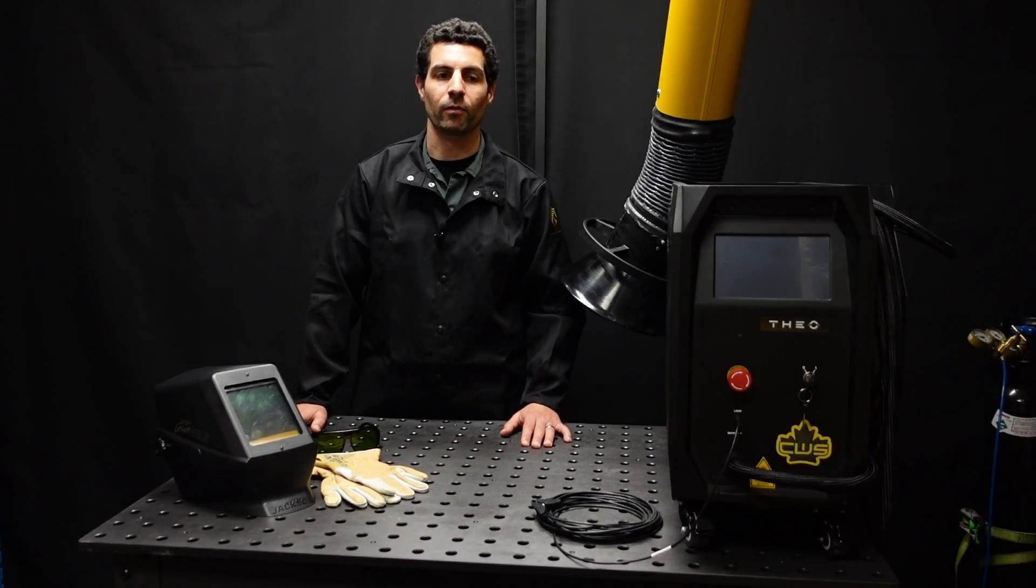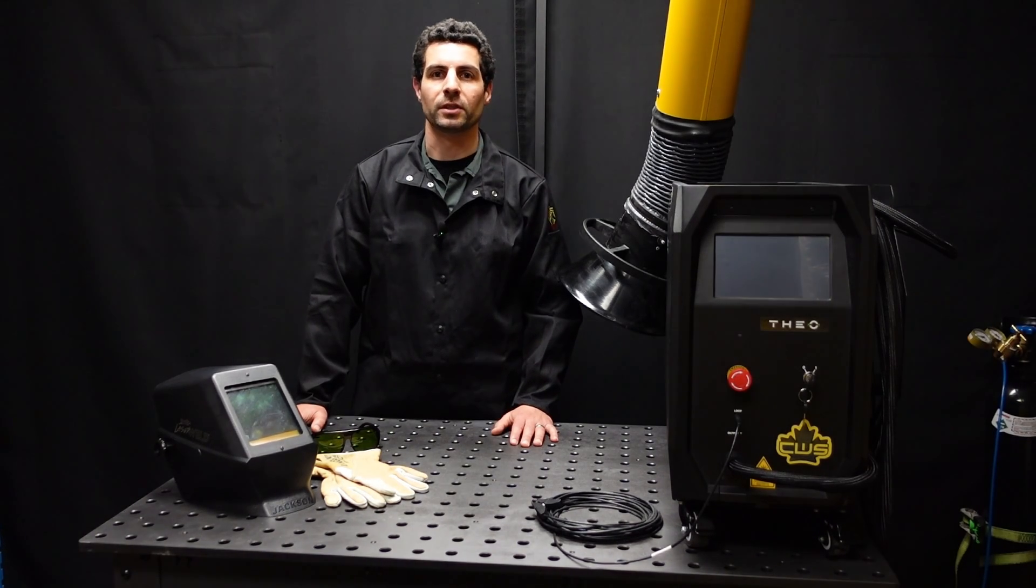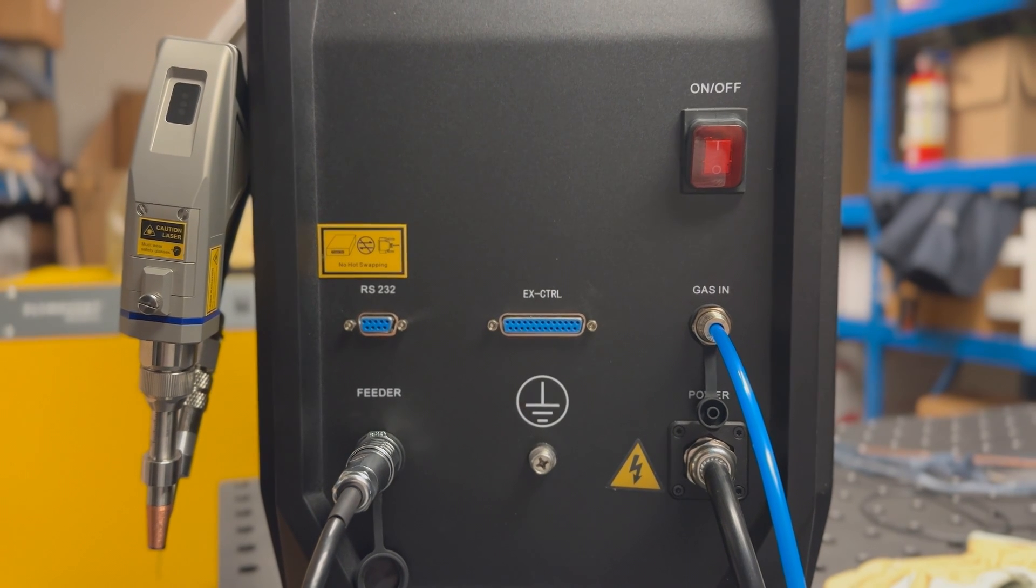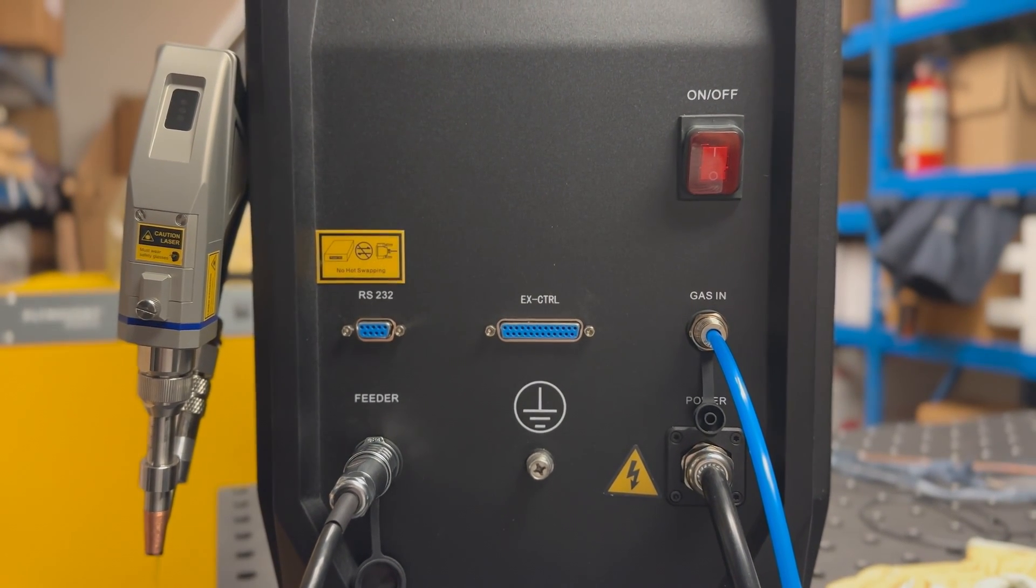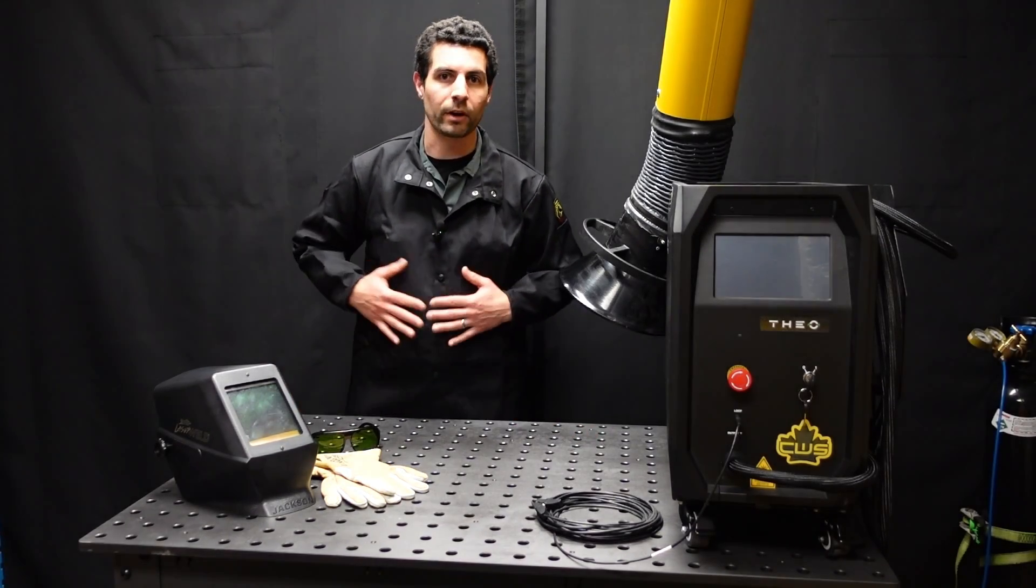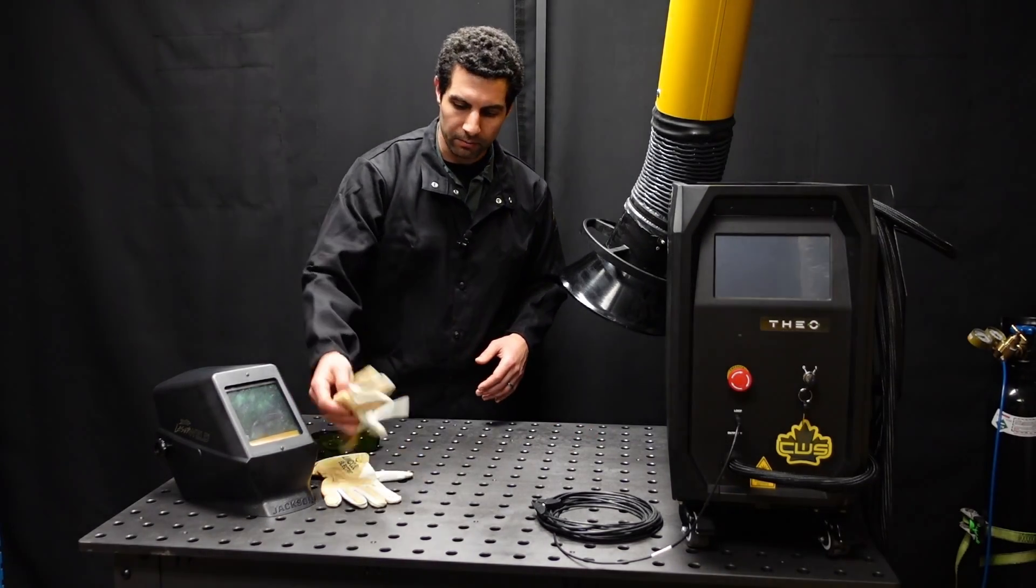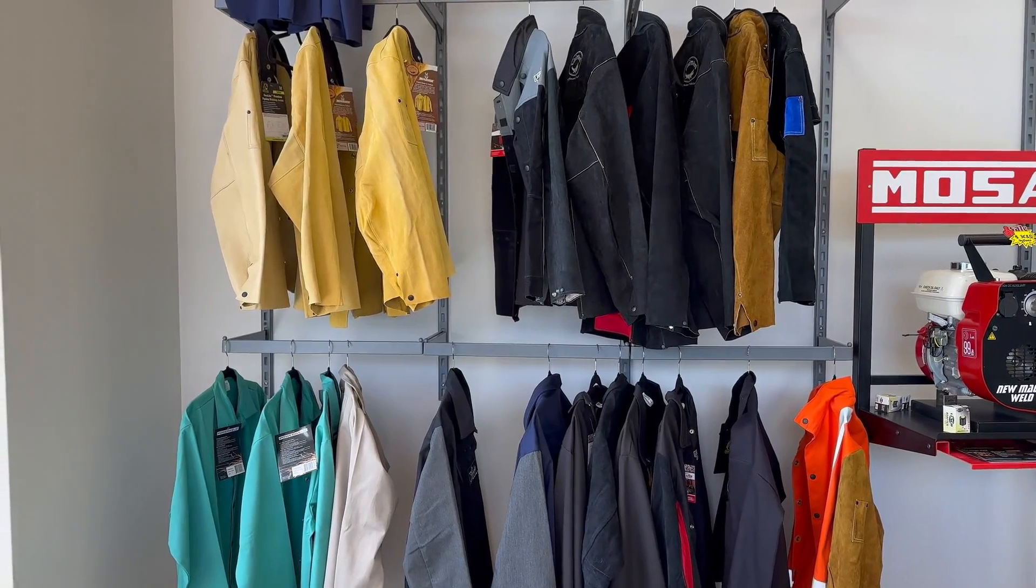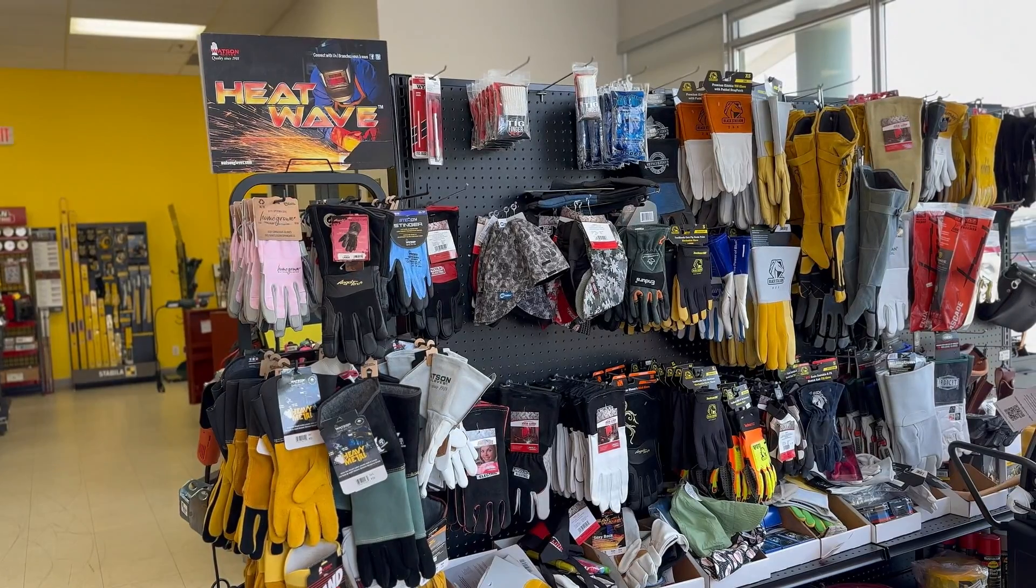Before we get into the fun of welding with this machine, it's time to talk about safety. There's a lot of differences between a handheld laser welding machine and a typical welding machine, and there are some similarities too. So we'll start with the similarities. For PPE, you're going to wear a standard welding jacket, standard welding gloves. Usually TIG gloves are fine. The idea is you just want your skin covered just like you would with any other welding process.